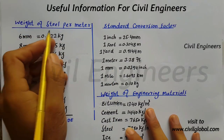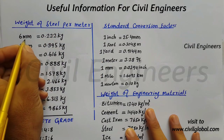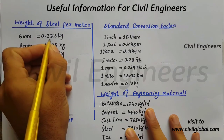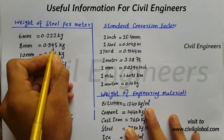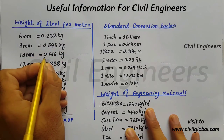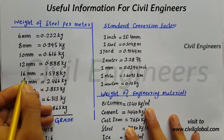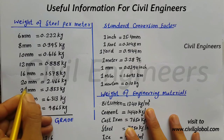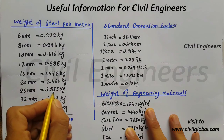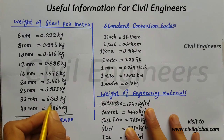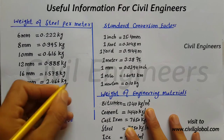The first topic is weight of steel per meter. For 6mm diameter, the weight is 0.22 kg. For 8mm diameter, the weight is 0.395 kg. For 10mm, the unit weight is 0.616 kg. For 12mm, it is 0.888 kg. For 16mm, it is 1.578 kg. For 20mm diameter, 2.466 kg. For 25mm diameter, 3.853 kg. For 32mm diameter, 6.313 kg. And for 40mm diameter of steel, it is 9.865 kg.